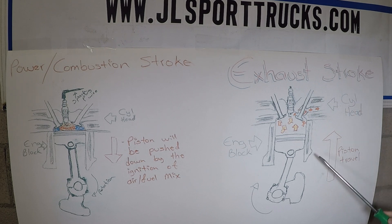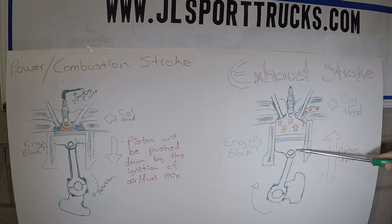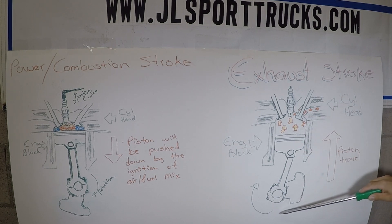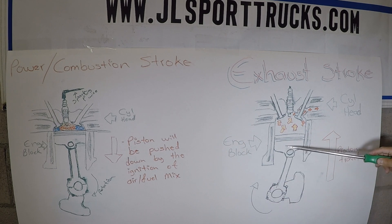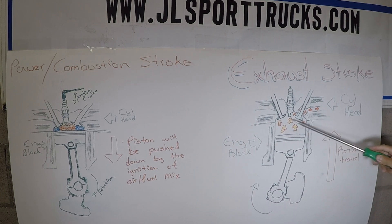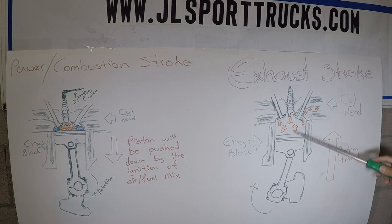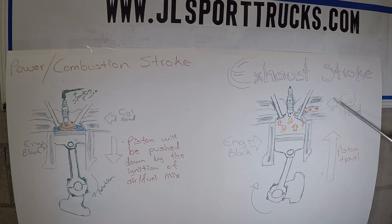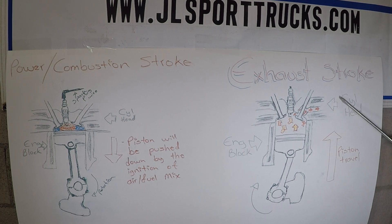Now we're in the last phase, which is the exhaust stroke. Right when the piston is at the bottom, what's going to take place is the crankshaft is going to open the exhaust valve this time, and as the crankshaft rotates, this is going to create an upward movement of the piston, which is going to force all the burned mixture out into the exhaust system — either an exhaust manifold, headers, whichever exhaust system your vehicle came equipped with.